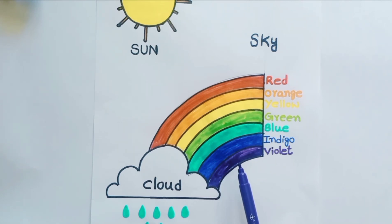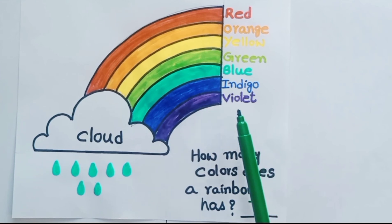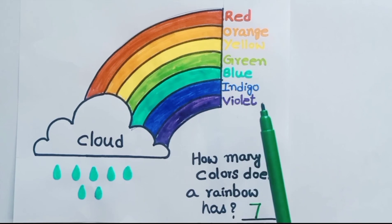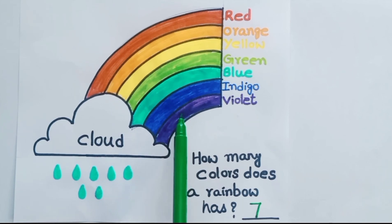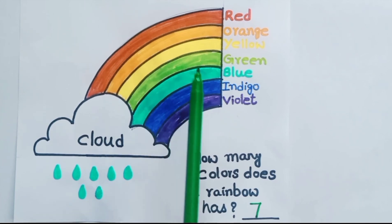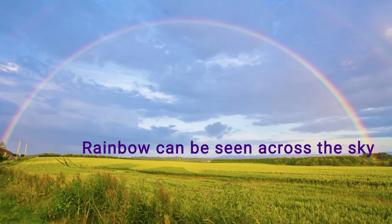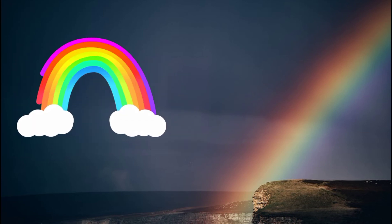How many colors are there in a rainbow? The colors are: red, orange, yellow, green, blue, indigo, and violet. How many colors are there totally? There are totally seven colors. A rainbow has seven colors. A beautiful rainbow is formed across the sky. Now children, practice the sequence of all seven different colors in a rainbow.